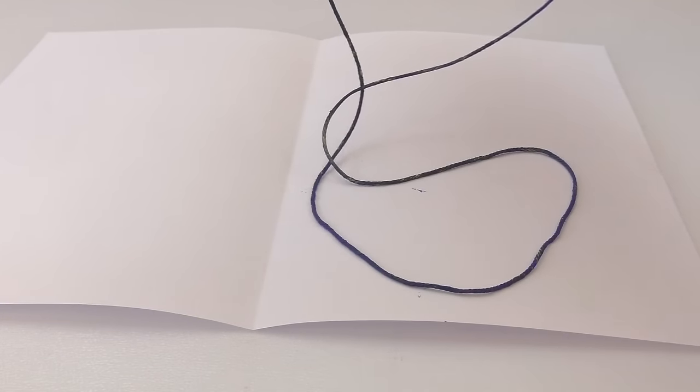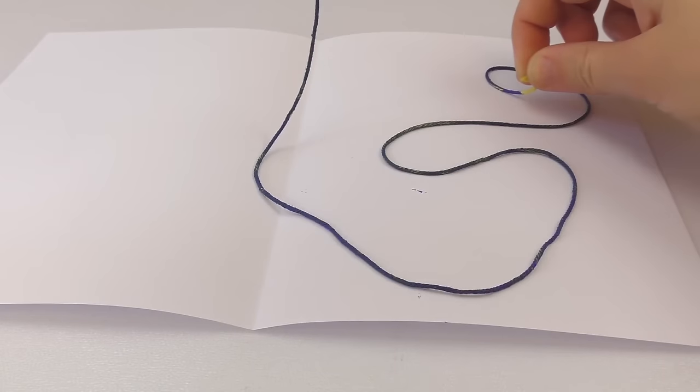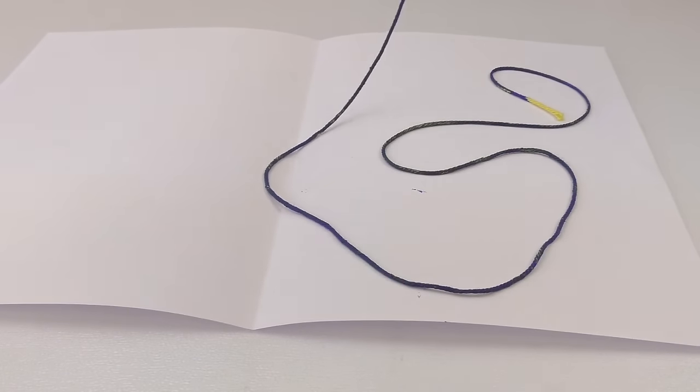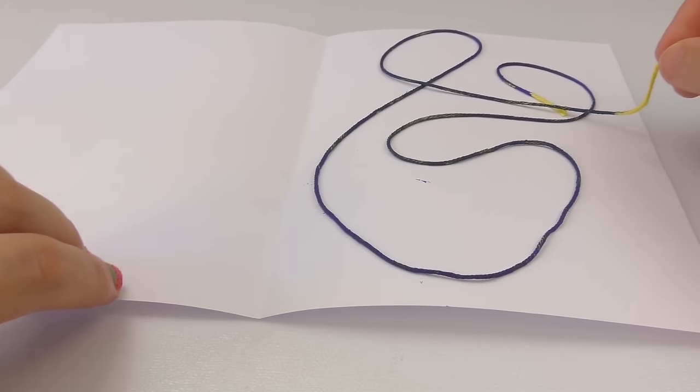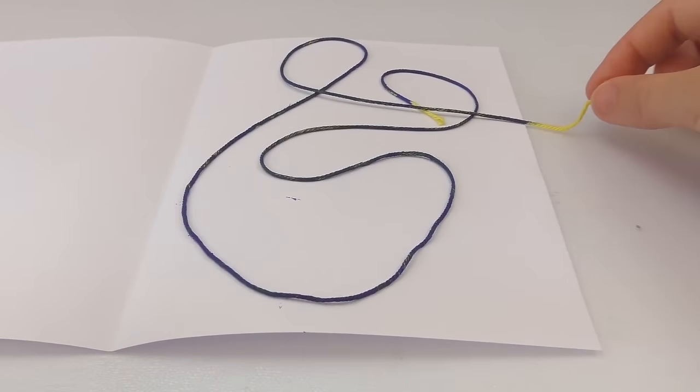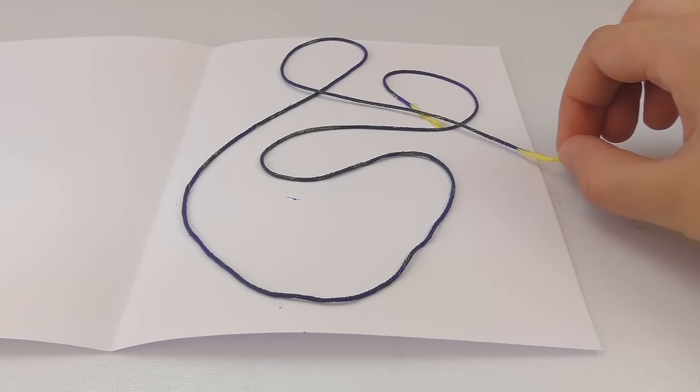I'm just going to do whatever design I feel like. Maybe a little twirl, and then a little curve and twirl over here. I want to leave the blank side of the string, the side that's not painted, outside of the paper so we can pull it out later.